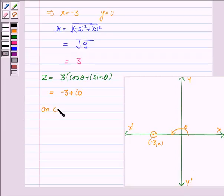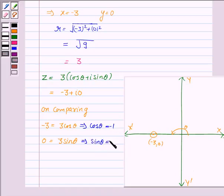On comparing, we get -3 = 3 cos θ and 0 = 3 sin θ. The first equation implies cos θ = -1, and the second equation implies sin θ = 0.